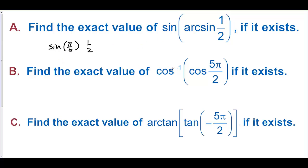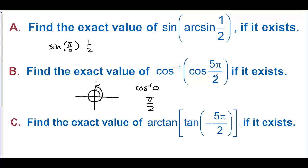Find the exact value of inverse cosine of cosine of 5 pi over 2. Let's find where 5 pi over 2 is — counting around, it is the same as pi over 2. Cosine of 5 pi over 2 is 0. And the inverse cosine of 0 is pi over 2. So the answer is not 5 pi over 2 — these do not cancel directly — but they correspond to the same angle, and the answer is pi over 2.